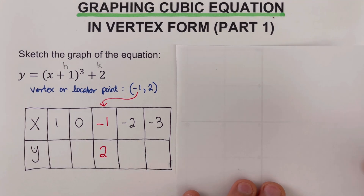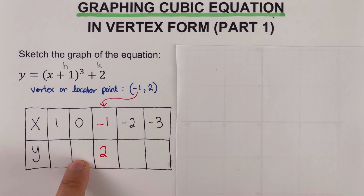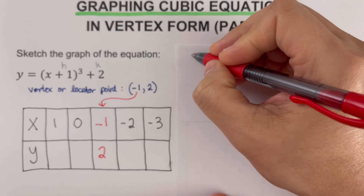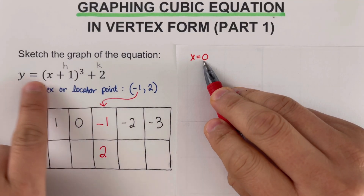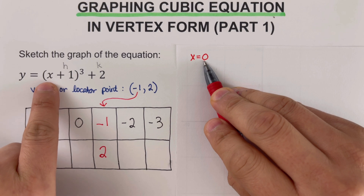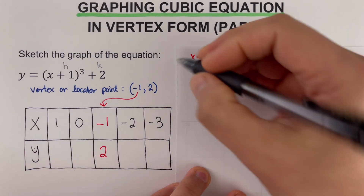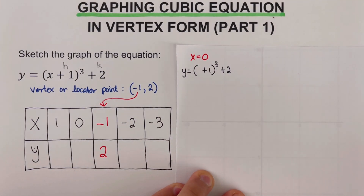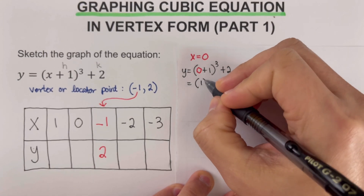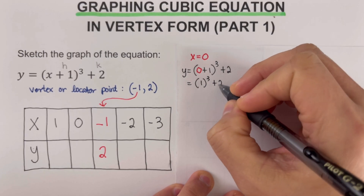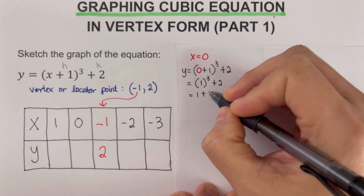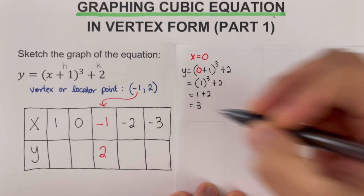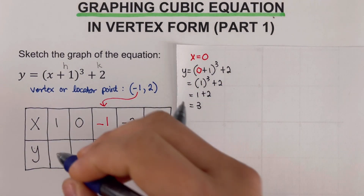We determine the y value when x is 0. We copy the equation and substitute 0 for x. So we get 0 plus 1 is 1, and then that's cubed plus 2. One cubed means 1 times 1 times 1, which equals 1. Then 1 plus 2 is 3. So the y value when x is 0 is 3.